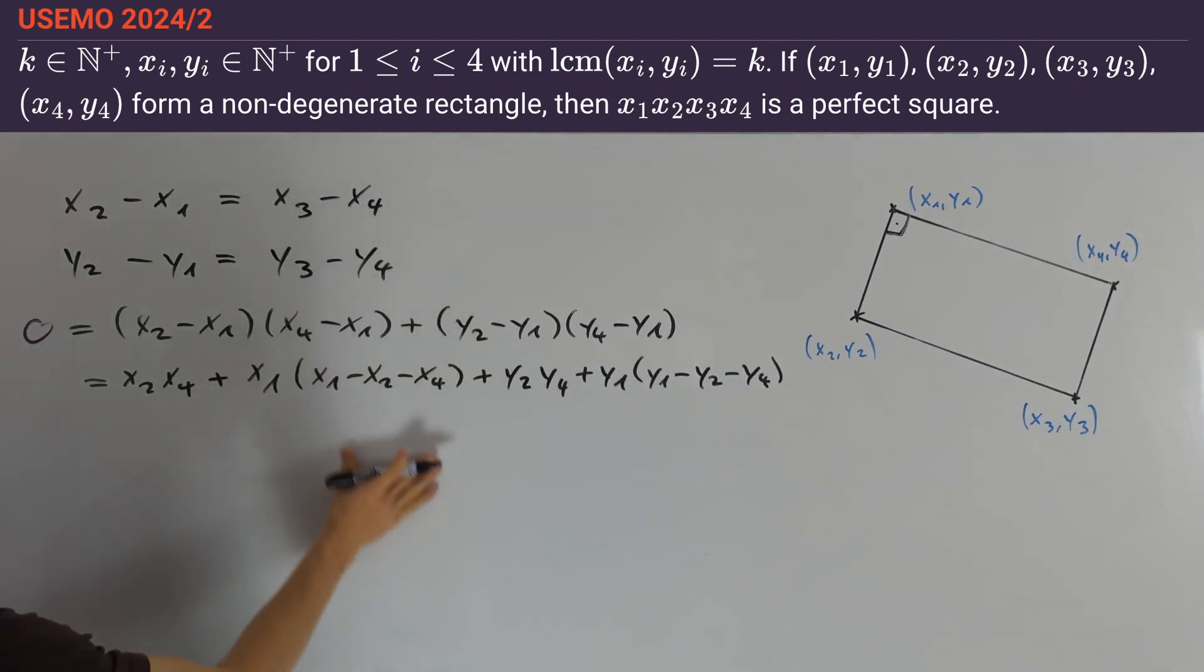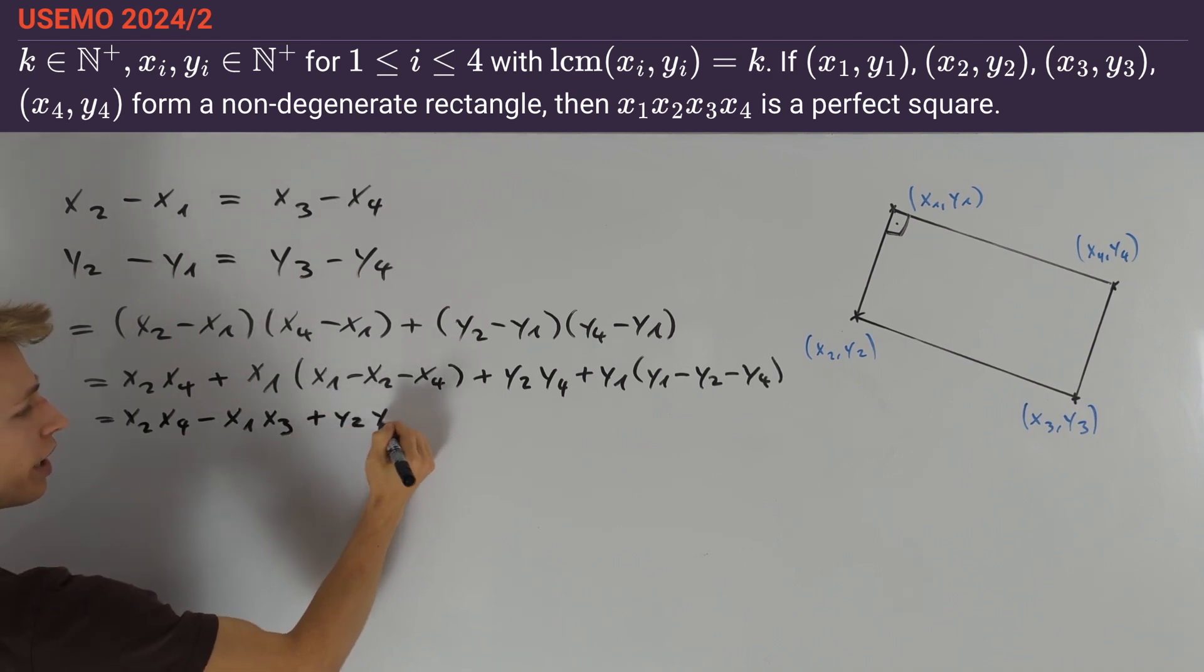We can see that x1 minus x2 minus x4 is nothing but negative x3, and the same holds for the y terms. Therefore we can write this as x2x4 minus x1x3 plus y2y4 minus y1y3.